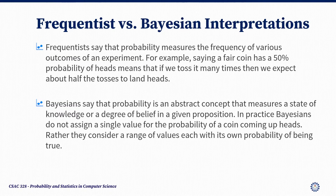Let's come now to the frequentist versus Bayesian interpretations. There are two prominent and sometimes conflicting schools of statistics: the Bayesian and frequentist. Their approaches are rooted in different interpretations of the meaning of probability.